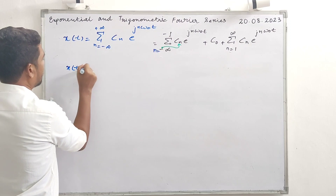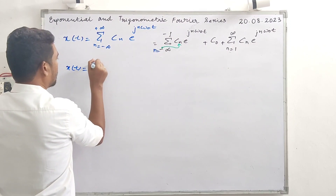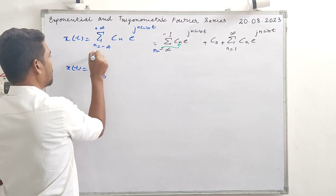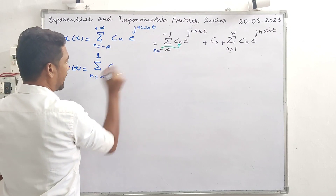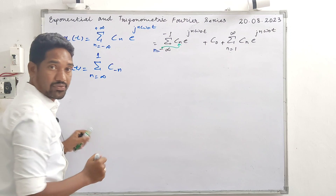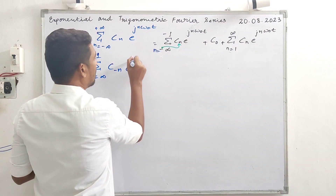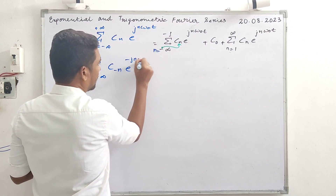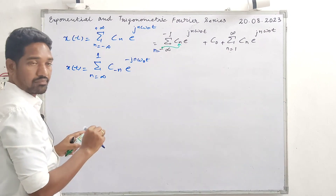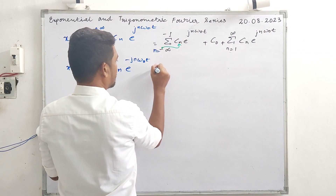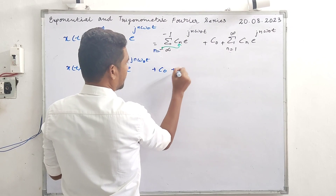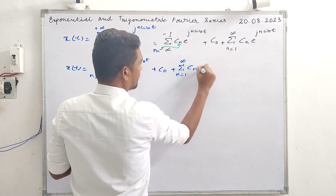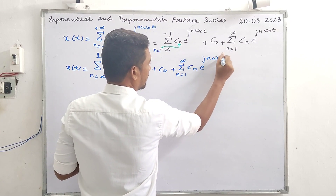After the substitution, x(t) becomes: a summation from n equal to 1 to infinity of c of minus-n, e raised to j times negative n omega-naught t, plus c-naught, plus summation n equal to 1 to infinity of c_n e raised to j n omega-naught t.